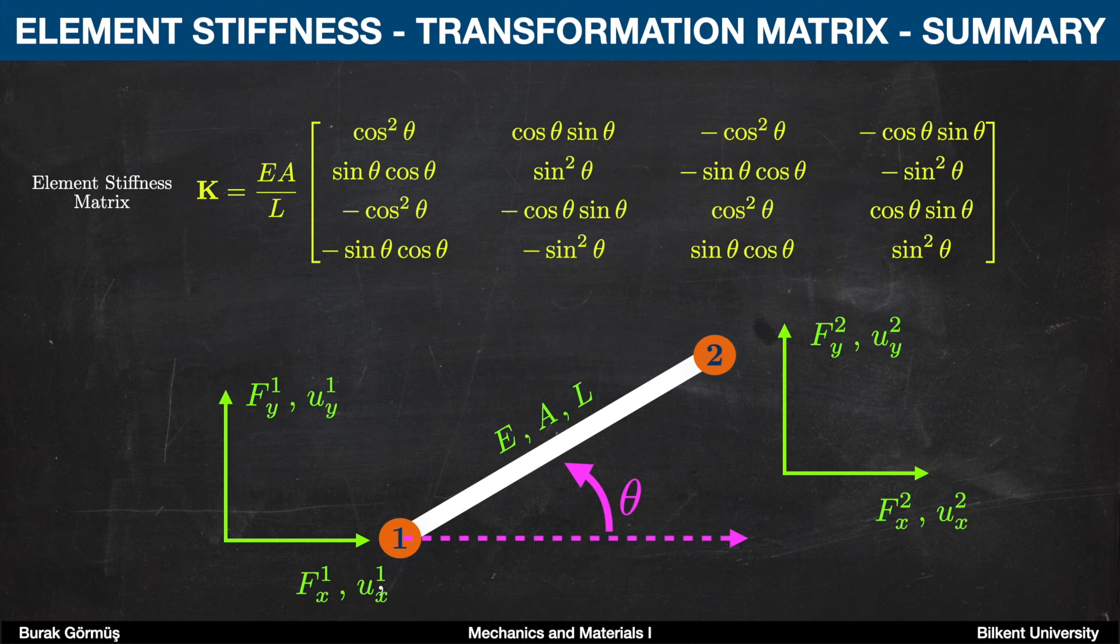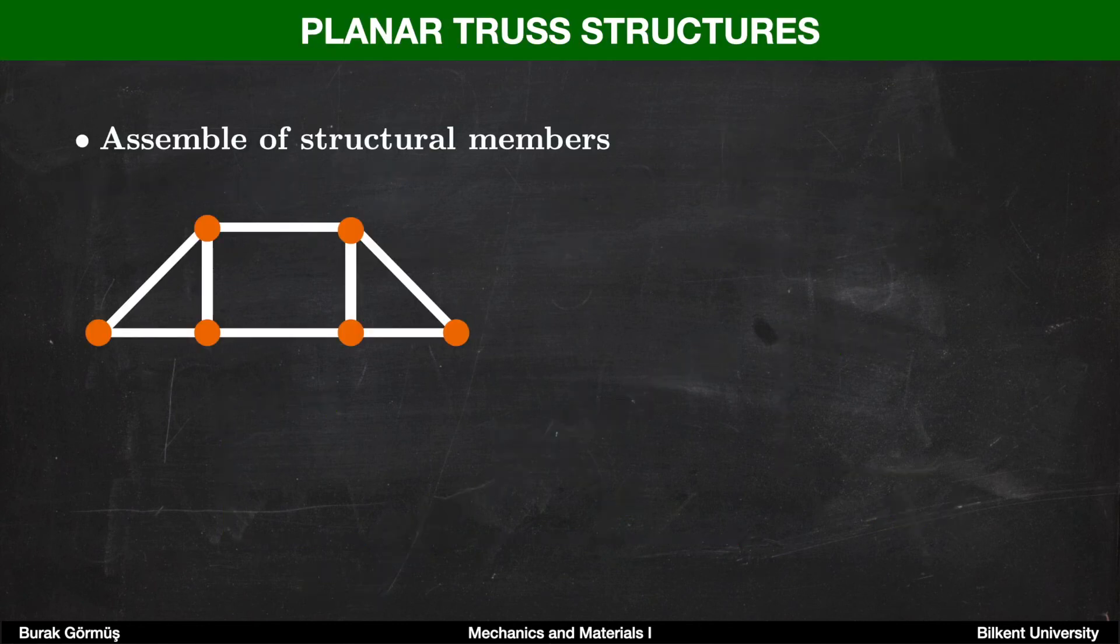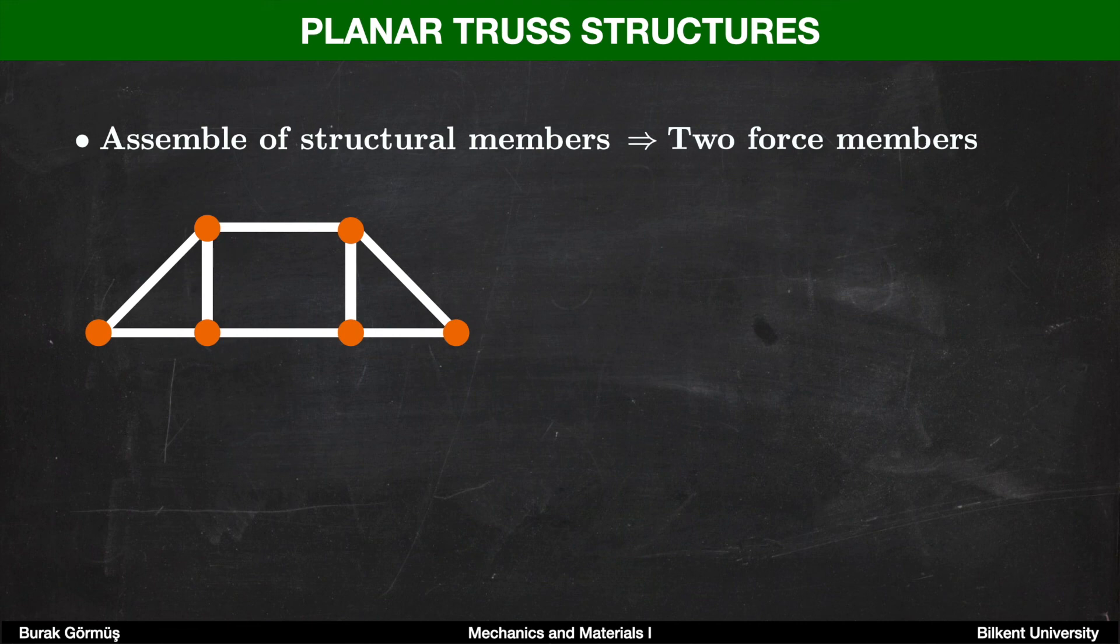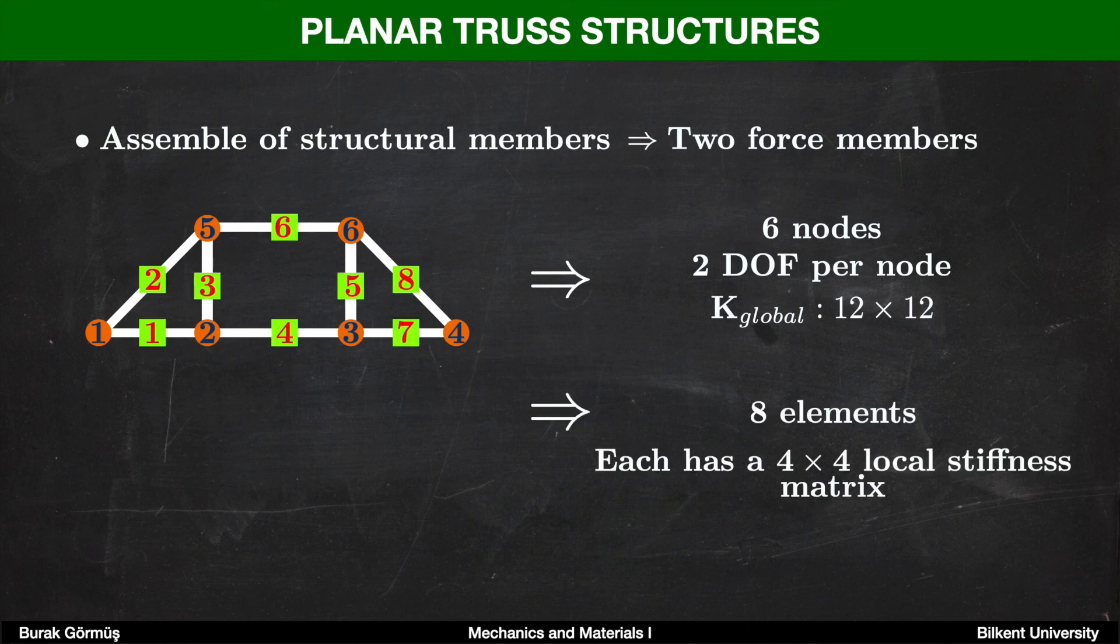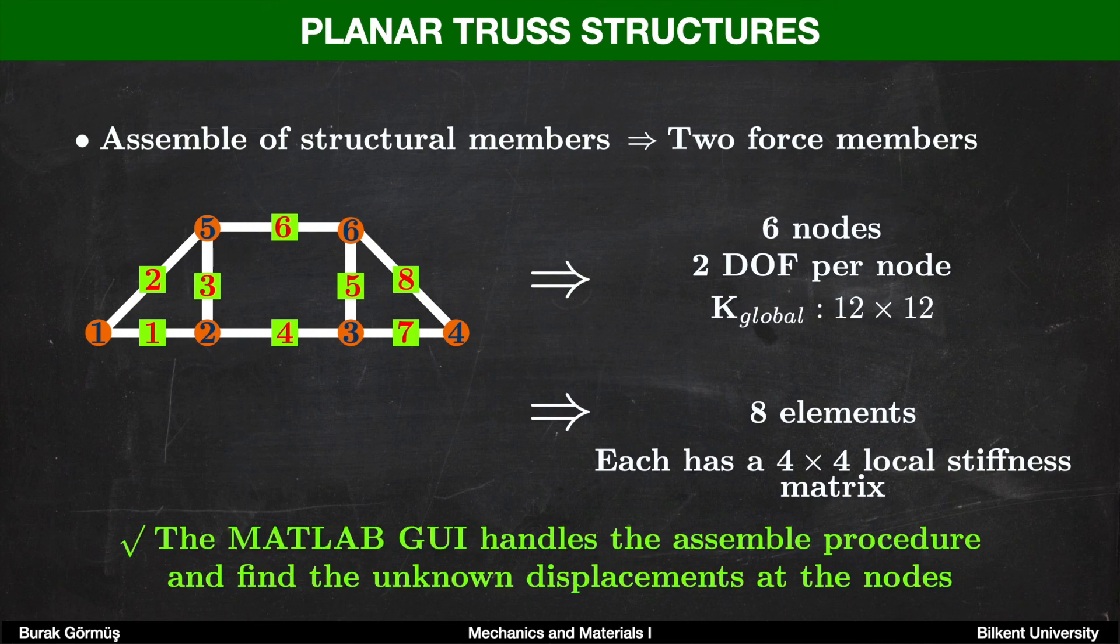After expressing the stiffness matrix, now it's time to understand planar truss structures better. Planar truss structures are an assembly of structural members whose stiffness matrix is obtained by employing the transformation matrix idea we discussed. The elements are two force members. For the system on the left, we have six nodes and each node has two unknowns in x and y axes. Therefore, our global stiffness matrix should be 12 by 12. We have eight elements, each with a 4 by 4 local stiffness matrix. Each value in these matrices needs to be put in our 12 by 12 global stiffness matrix so we can assemble our geometry.